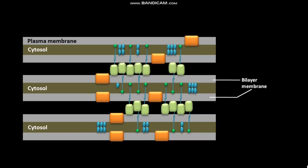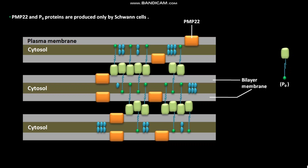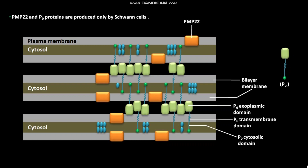The two most abundant membrane peripheral myelin proteins are PMP22 and P0. PMP22 and P0 proteins are produced only by Schwann cells. The P0 protein has three domains: the P0 exoplasmic domain, the P0 transmembrane domain, and the P0 cytosolic domain.